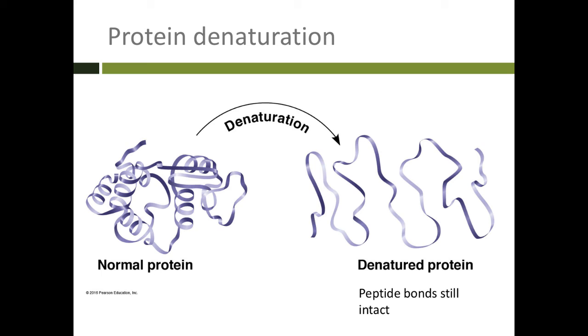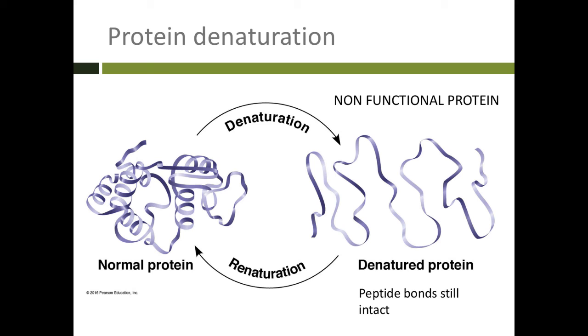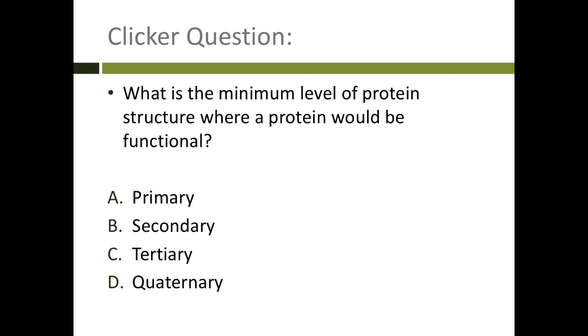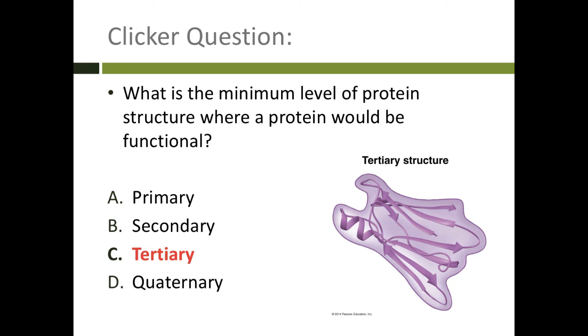but it's lost secondary and tertiary structure. This is a non-functional protein. Because it doesn't have the correct shape, it cannot do its job. Sometimes it's possible to re-nature a protein back to its normal shape. So the minimal level of protein structure where the protein is functional - stop and answer. Did you answer tertiary structure? If you did, you are correct. The protein needs to be folded up to be functional.